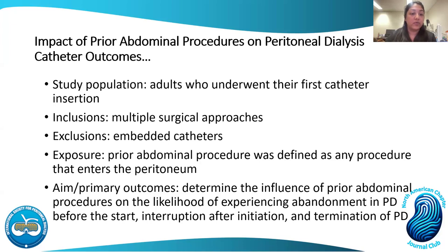The risk exposure was a prior abdominal procedure defined as any procedure that entered the peritoneum, further subclassified by location and number of procedures. The primary outcome was to determine the influence of prior abdominal procedures on the likelihood of experiencing abandonment of PD before start, interruption after initiation, or termination of PD. The outcome was defined as time between catheter insertion and these variables. Complications leading to those outcomes included tunnel infection, exit site infection, peritonitis, flow restriction, pain, bleeding, catheter damage, and urinary retention — situations commonly seen and frequently treated.